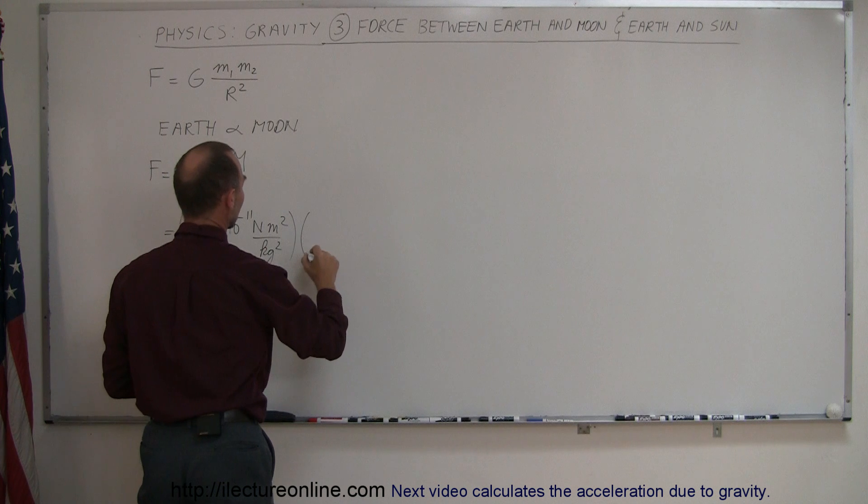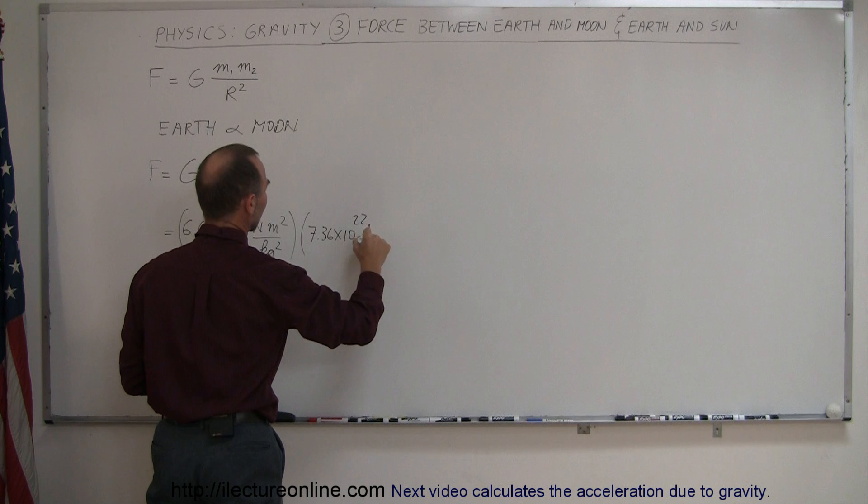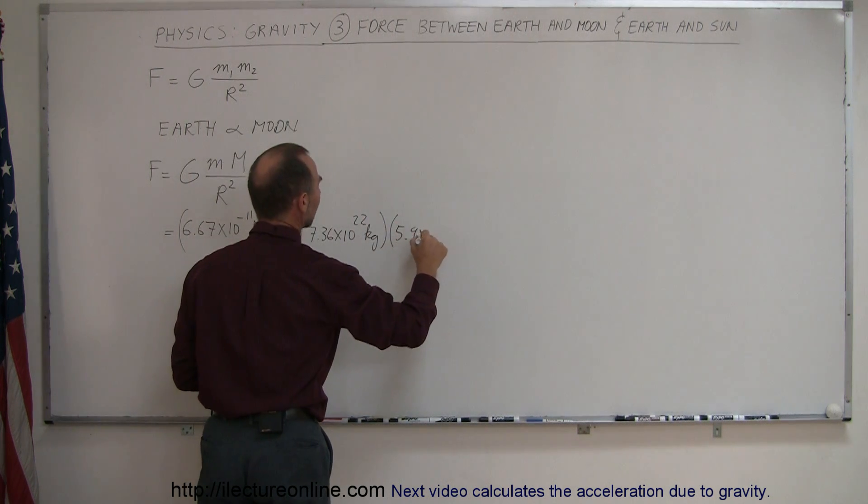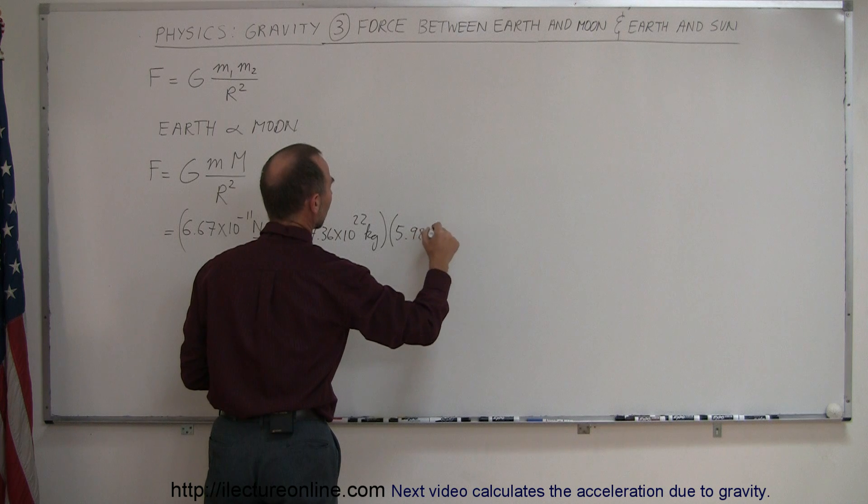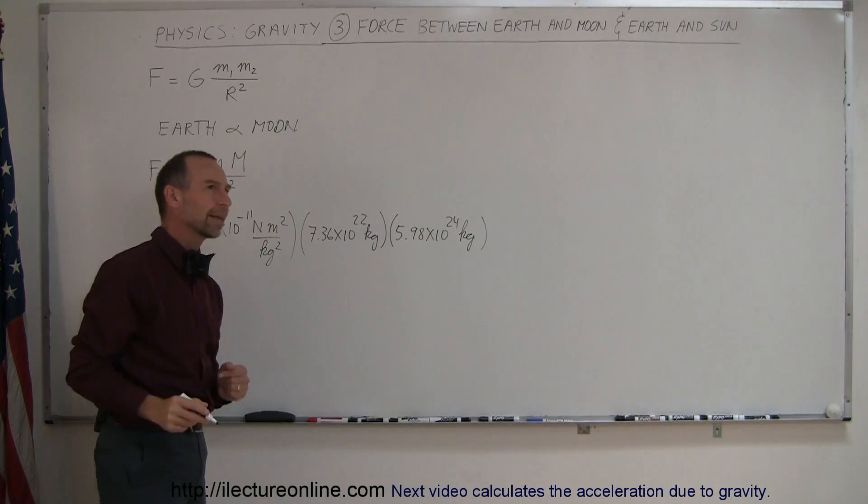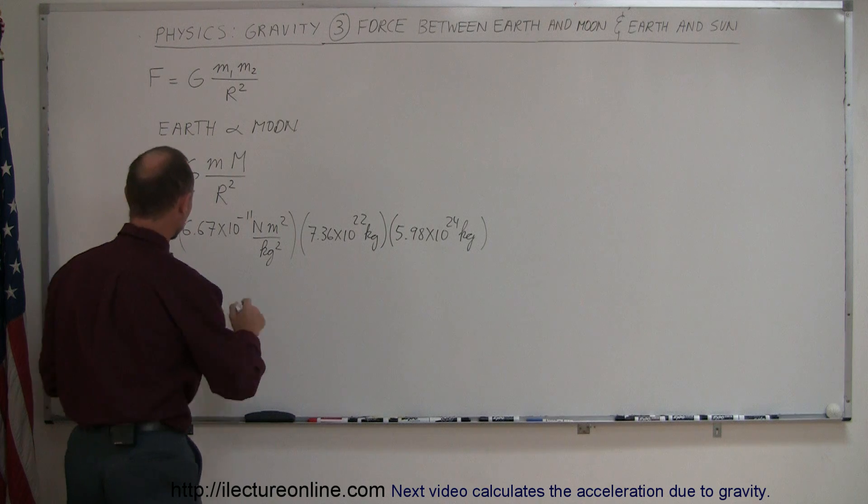The mass of the Moon, that would be 7.36 times 10 to the 22 kilograms. The mass of the Earth, that would be 5.98 times 10 to the 24 kilograms. Turns out that the mass of the Moon is about 1/50 of the mass of the Earth, roughly speaking.